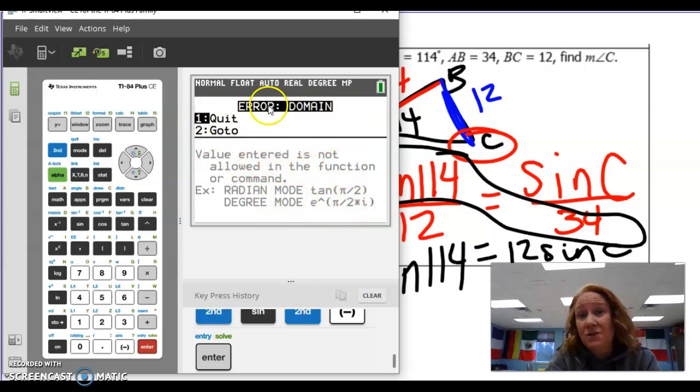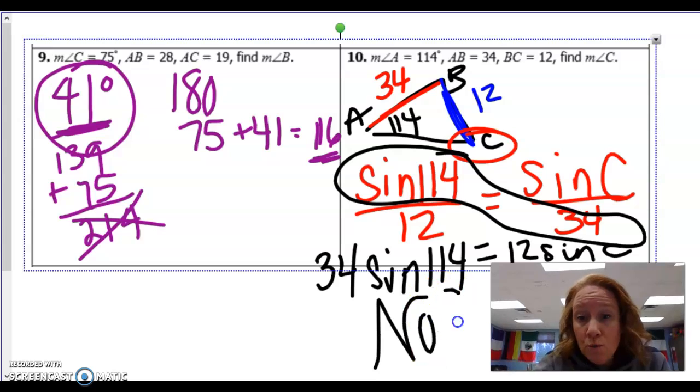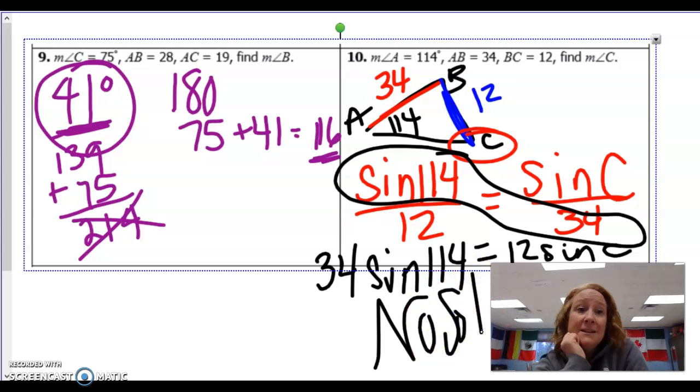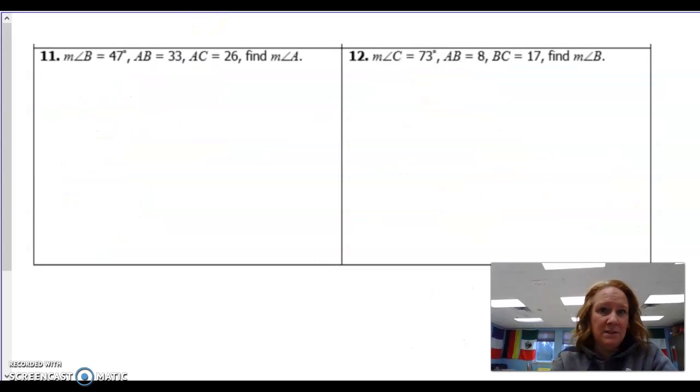So I go second, sine inverse of that thing. And it's going to say value entered is not allowed in the function. So you just can't do it because the domain error is too big. So the answer to this one then is no solution. Sometimes you get a no solution. That's totally legal. Let's do one more, the next one, just because I want to look at that ambiguous case where there might be two different options of how to go.